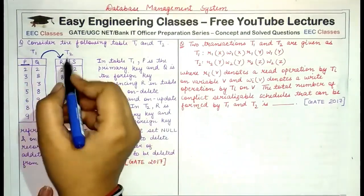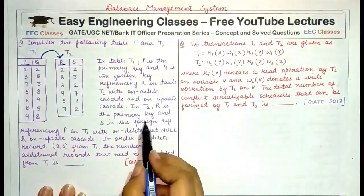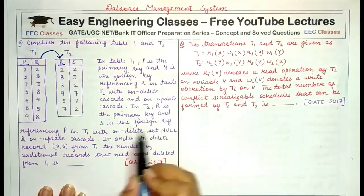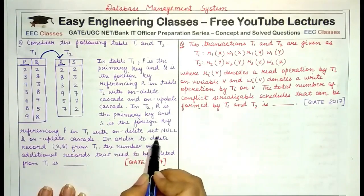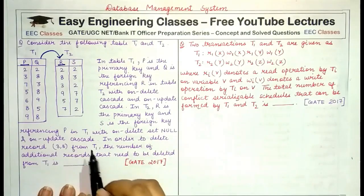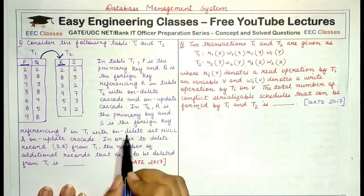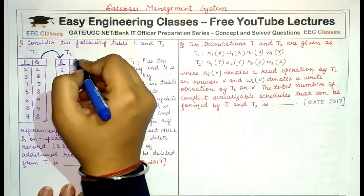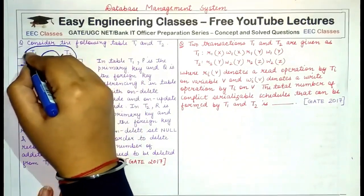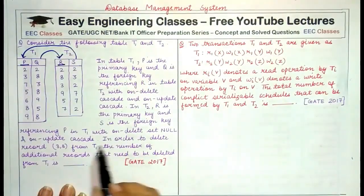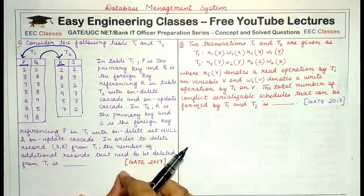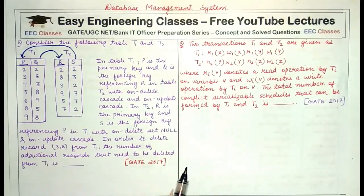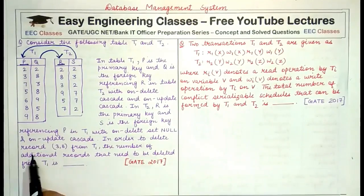In T2, R is the primary key and S is the foreign key referencing P in T1, with ON DELETE SET NULL and ON UPDATE CASCADE. We are asked: in order to delete record (3, 8) from T1, how many additional records must be deleted from T1?